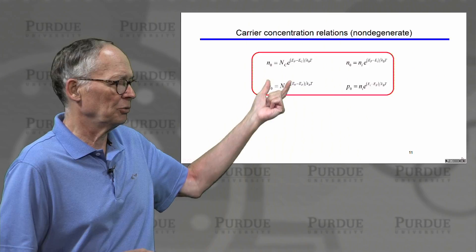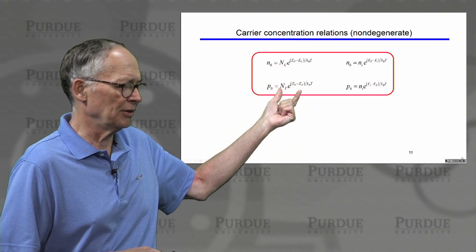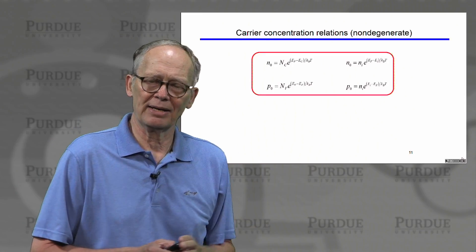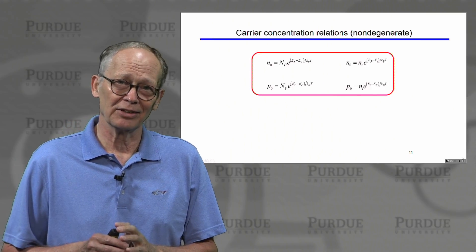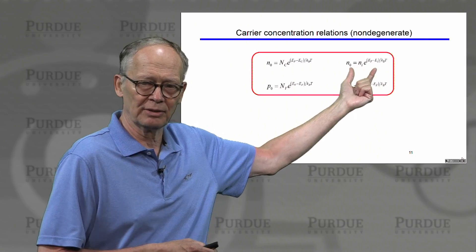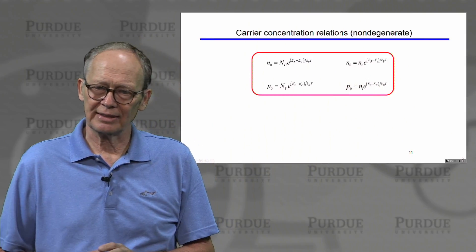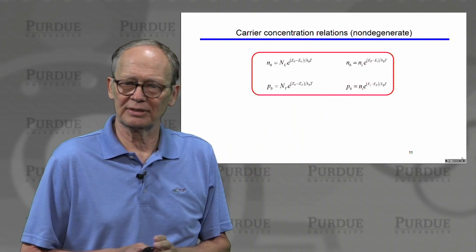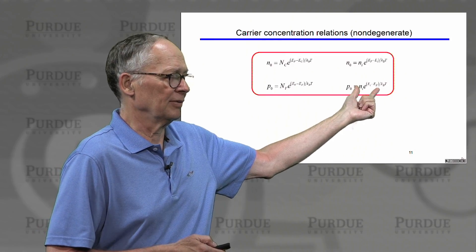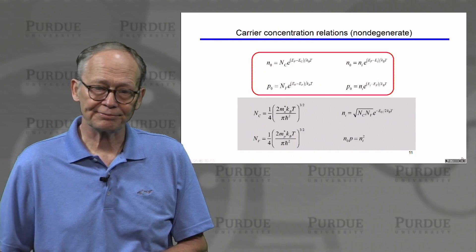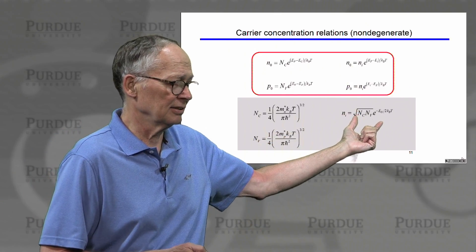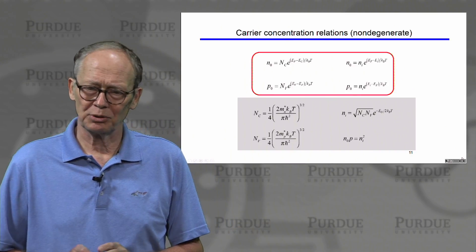In summary, we developed relations telling us how electron and hole concentration relate to the position of the Fermi level with respect to the band edges. We also showed a mathematically equivalent and sometimes more convenient form: if we know the intrinsic carrier concentration accurately — in silicon it's easy to remember as 1×10¹⁰ — then the electron concentration equals the intrinsic carrier concentration times e to the (Fermi level minus intrinsic level) over kT. The higher the Fermi level is above the intrinsic level, the more electrons we have; the lower it is below the intrinsic level, the more holes we have. The effective densities of states and the intrinsic carrier concentration Ni are given by their respective expressions, and the product of the two is just Ni squared.